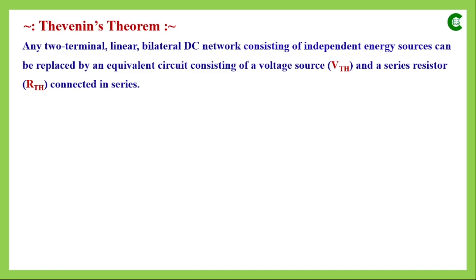It's not mandatory that we can apply Thevenin's and Norton's theorem only for DC networks — we can also apply them for AC networks as well. Also, the energy sources are not always independent; they can be dependent sources as well. And the variable element can be linear as well as nonlinear.